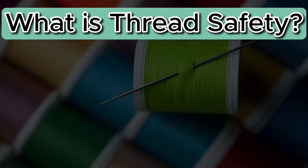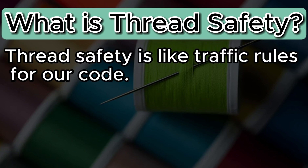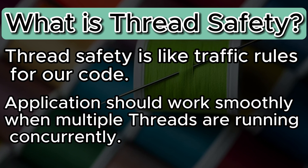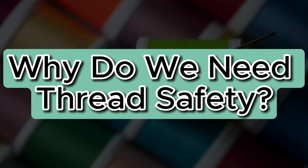What is thread safety? In the world of programming, thread safety is like traffic rules for our code. It ensures that when multiple parts of our program are running simultaneously, just like cars or other vehicles on the road, everything should work smoothly without any collision or accident. So why is thread safety so important? Well, think of it in this way.